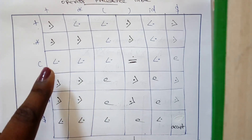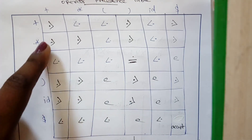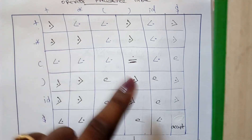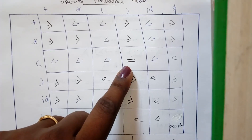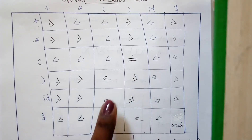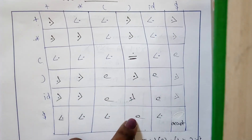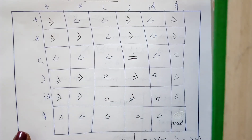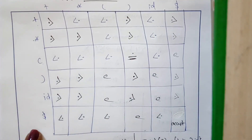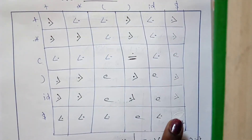In the comparison of each and every terminal with the other terminal, you may either have a lesser precedence, a greater precedence, or equal precedence. Sometimes you have error cases. And finally, for the dollar compared with dollar, we have an accepting condition.